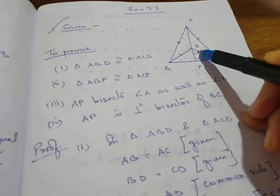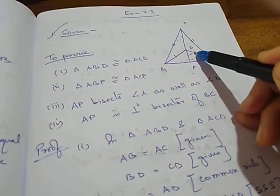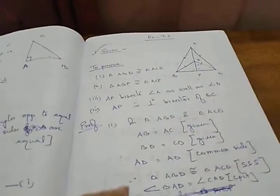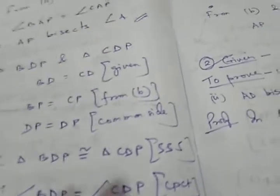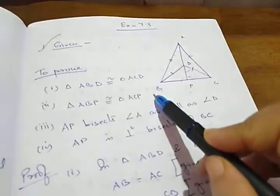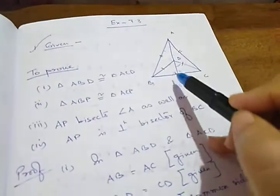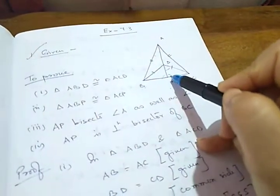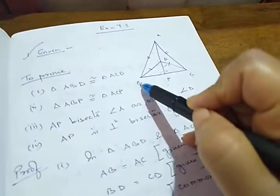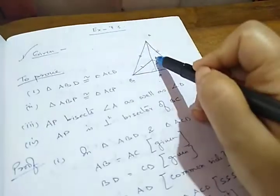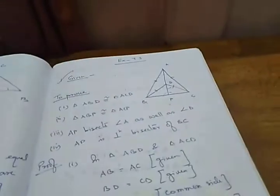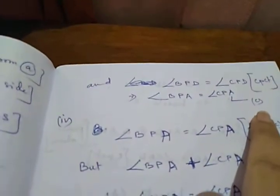Hence with the help of CPCT, angle BPD equals to angle CPD. These two angles are equal only when AP bisects angle D. Therefore AP bisects angle D because these two angles are equal. Also from CPCT, angle BPD equals to angle CPD. In place of BPD you can write BPA, and in place of CPD you can write CPA — the name has been changed and given as C.